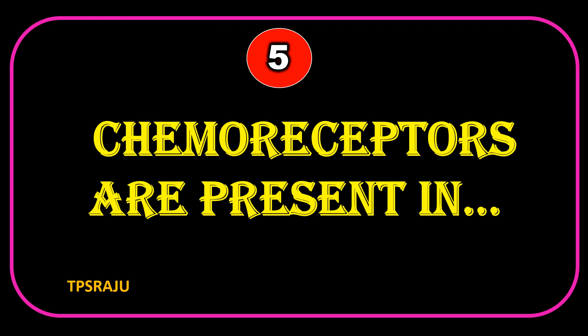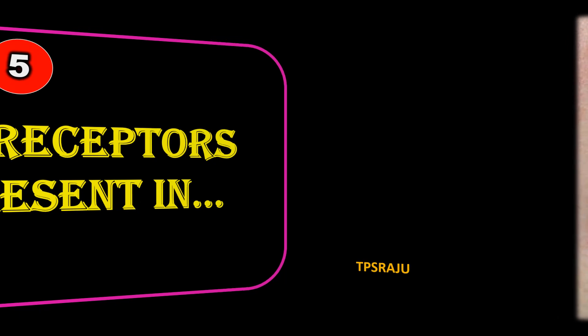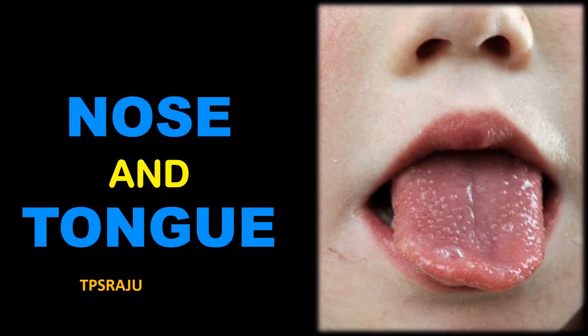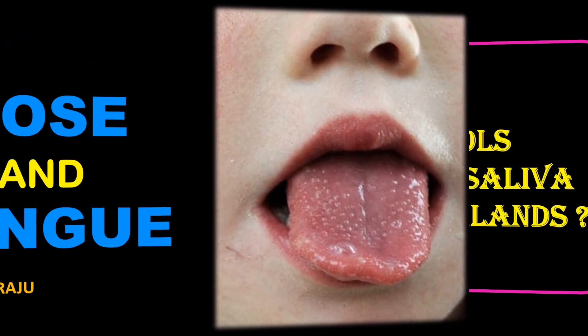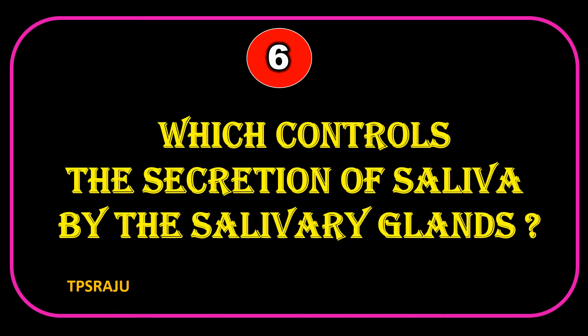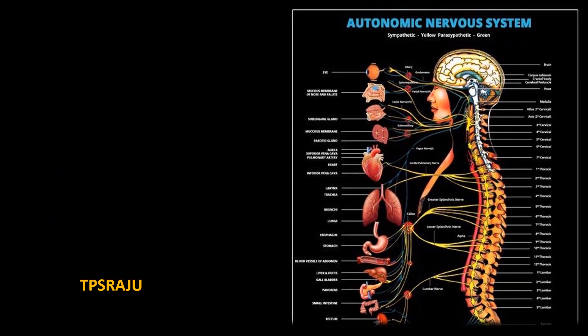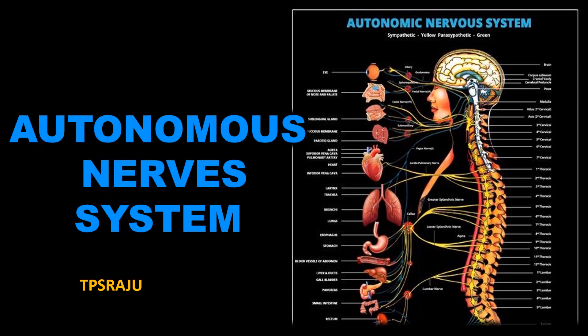Chemoreceptors are present in the nose and tongue. Which system controls the secretion of saliva by the salivary glands? The autonomous nervous system.